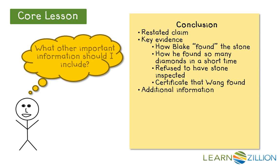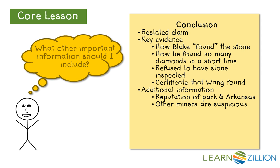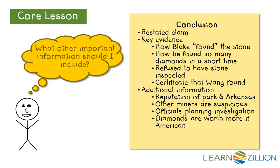Now I need to look for additional information that I might include. We have the reputation of the state park and Arkansas. We know that other miners were suspicious of Blake's good luck. We also know that park officials question his find, so they're planning an investigation. I need to include the point that the diamonds are worth more if they're American, since this explains why Blake would plant the diamonds. I also need that general statement of warning or benefit for the community — in this case, the people at Crater of Diamonds State Park.